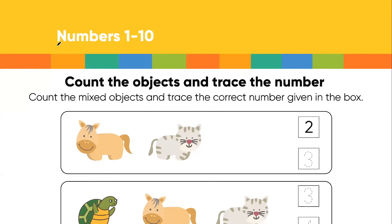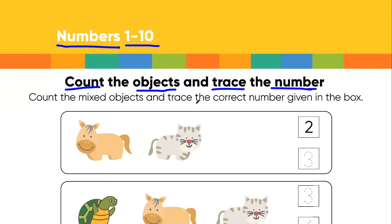Hi children! Today we are going to learn about numbers — numbers from 1 to 10. Here we have to count the objects and then trace the number. Here we have to first count the mixed objects and then trace the correct number that is given in the box.